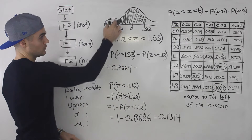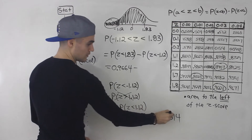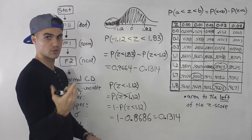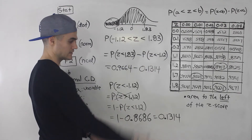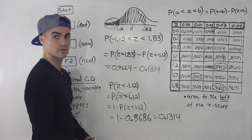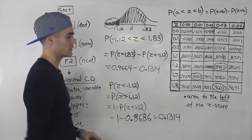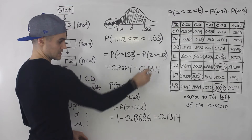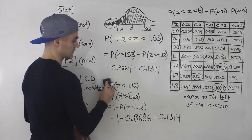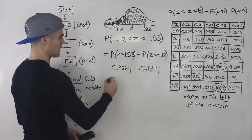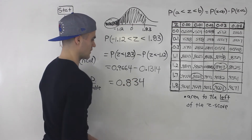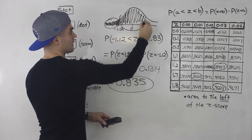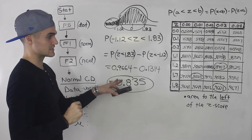Remember, all this manipulation is so we can use the positive z-score table. Hopefully your prof allows you to use the negative z-scores in the table too — then you could just look up that number directly. But if you can only use the positive z-score table, you have to find the equivalent expression using symmetry. So we found 0.1314 and we subtract: 0.9664 minus 0.1314 gives 0.835. That is the answer — the area between z = negative 1.12 and z = 1.83.